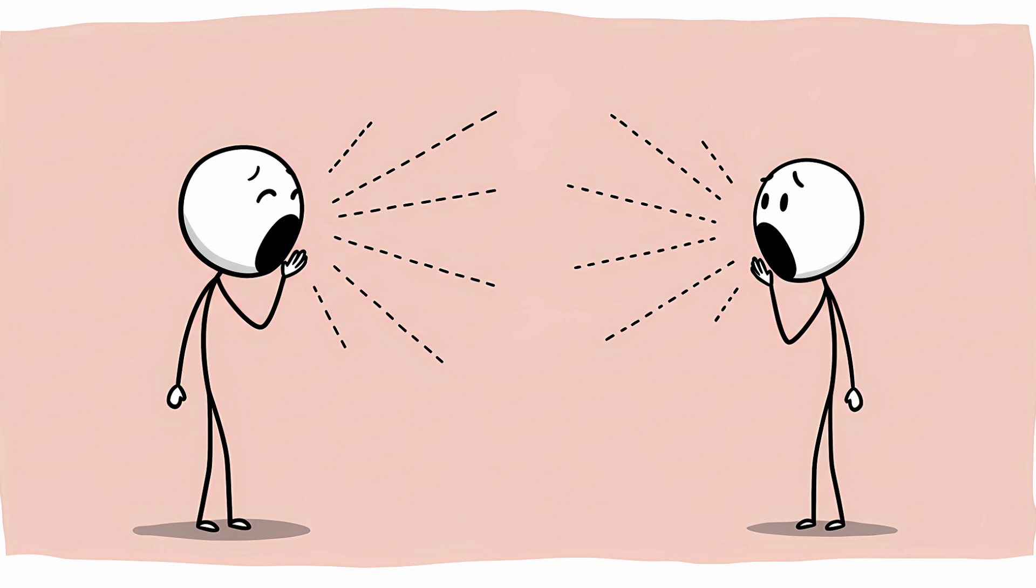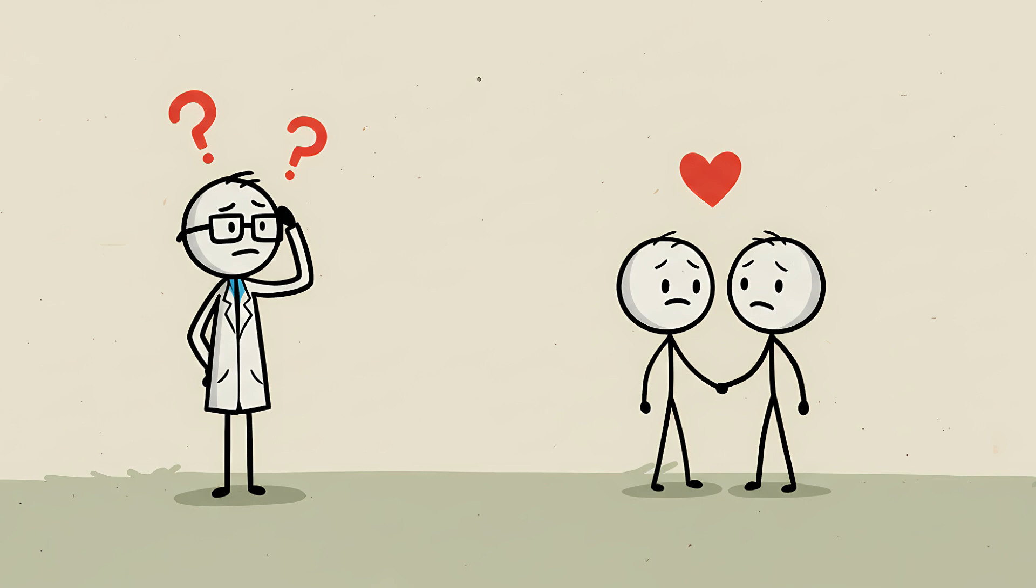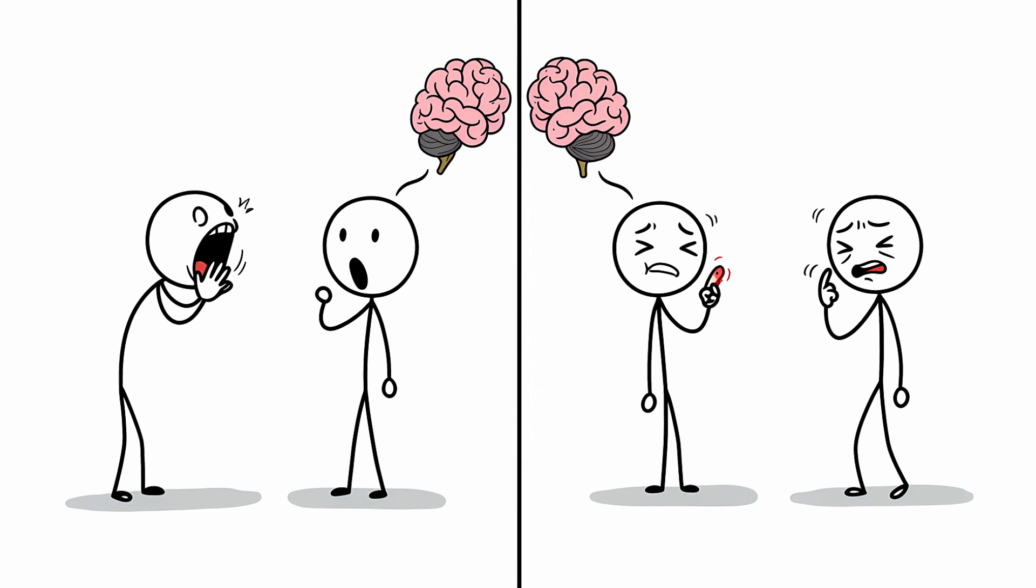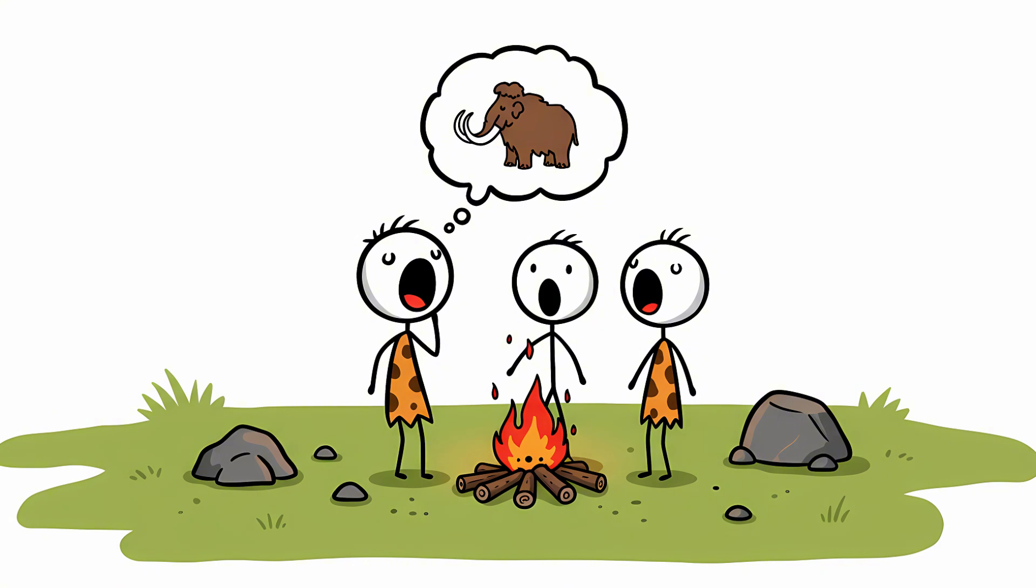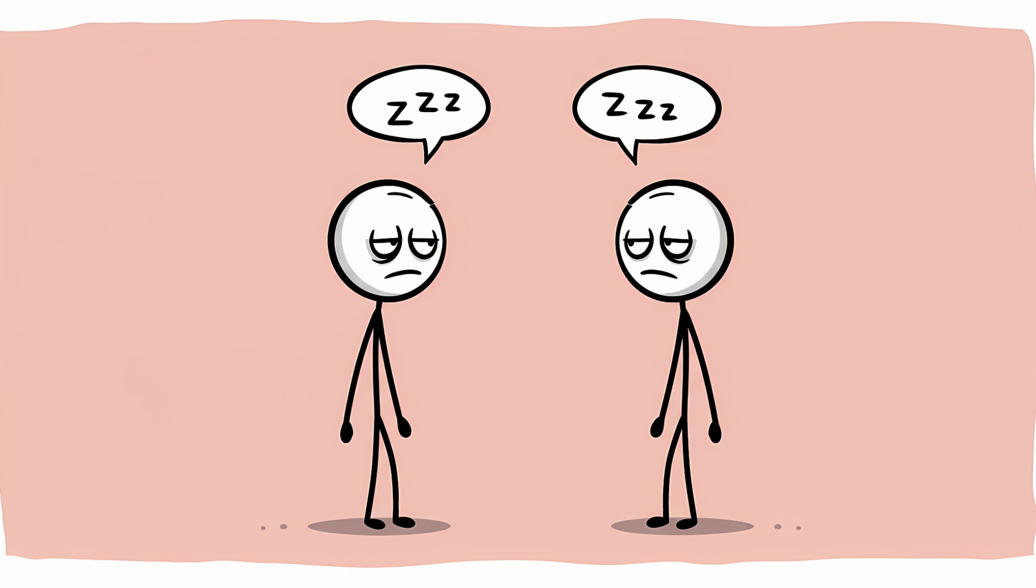This is yawn contagion, and it's a bizarre form of involuntary social mirroring. Scientists are still debating exactly why this happens, but the leading theory is that it's tied to empathy and social bonding. Yawning is thought to be controlled by mirror neurons in your brain, the same neurons that fire when you wince because you saw someone else get a paper cut. These neurons help you understand and mimic the actions and feelings of others. When you see someone yawn, your mirror neurons light up and whisper to the rest of your brain, 'Hey, that guy looks tired. Maybe we're tired, too. We should probably do the tired face thing to show solidarity.' It's an ancient, subconscious way of signaling that you're on the same page as your tribe.